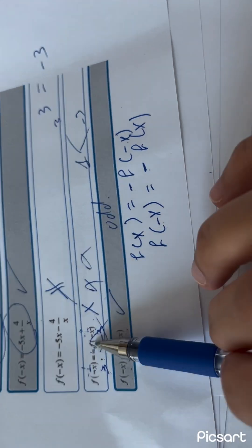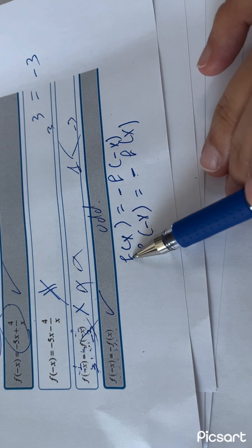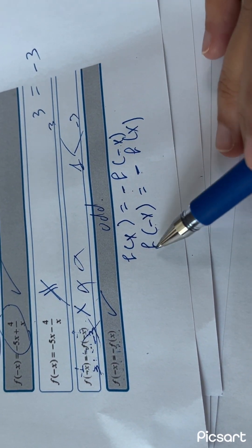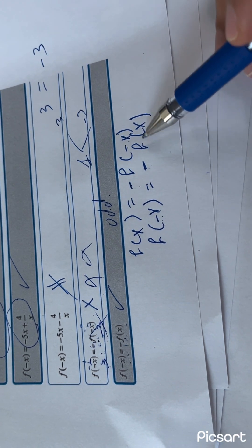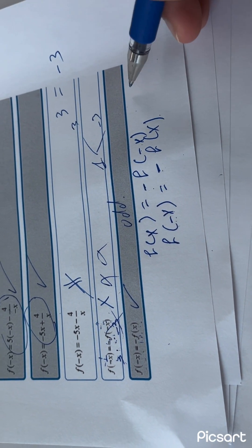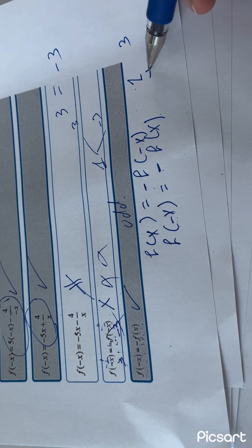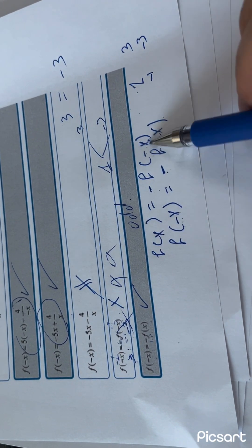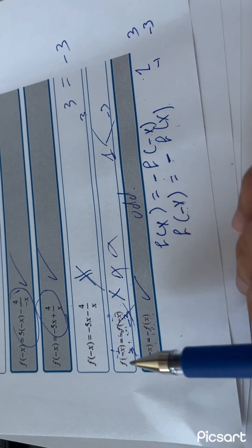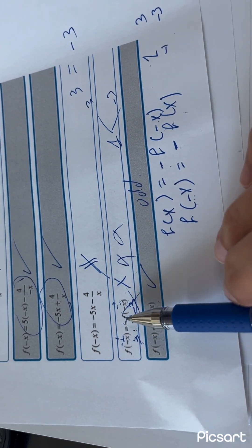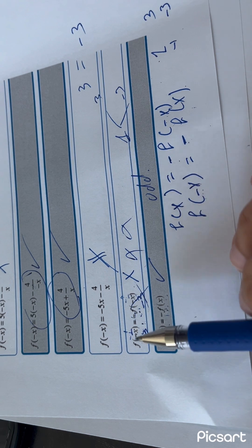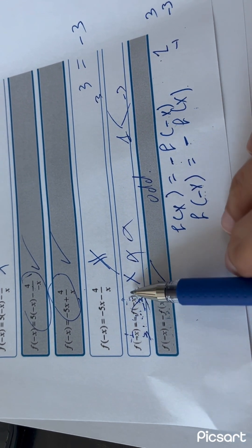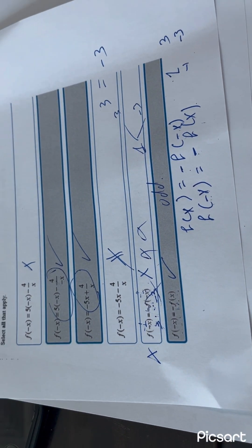Please don't get confused between these two. The odd function: F of X equals negative F of minus X, or F of minus X equals minus F of X. You're simply getting the negative: if you put 1 you get 3, if you put minus 1 you get minus 3. The other form, F of minus X equals minus F of minus X — this is not the identification of the odd function.